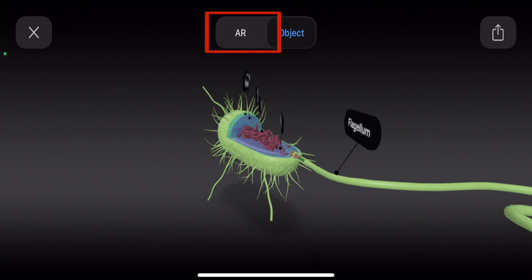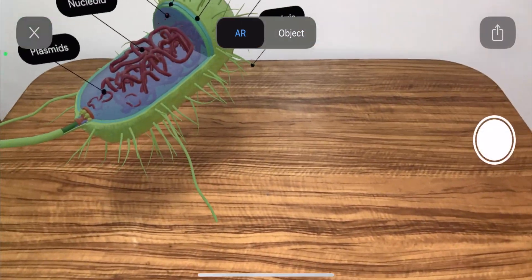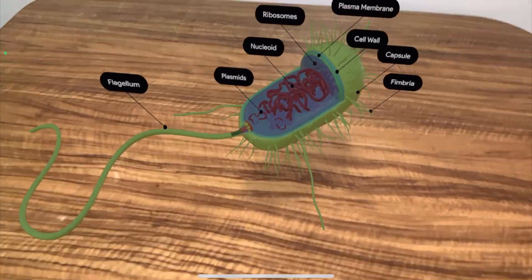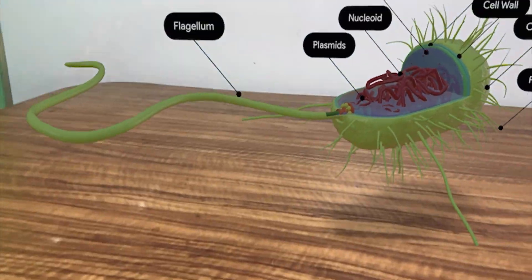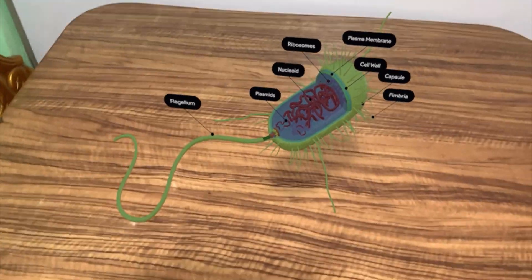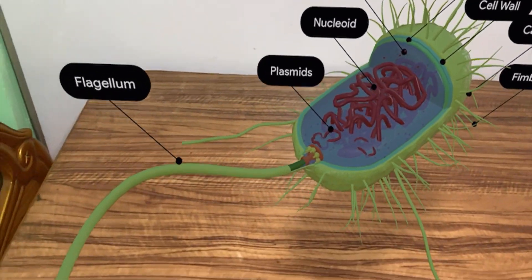Now let us select the AR option. Now as soon as you click it, you can see the cell is visible in front of you and you can see the entire cell, the bacterial cell over here. You can actually use your fingers and you can rotate the entire structure.